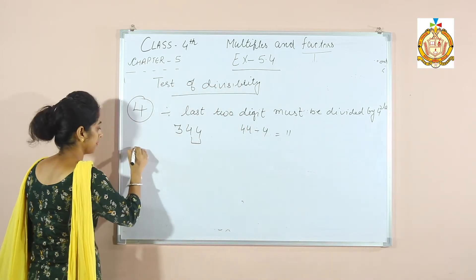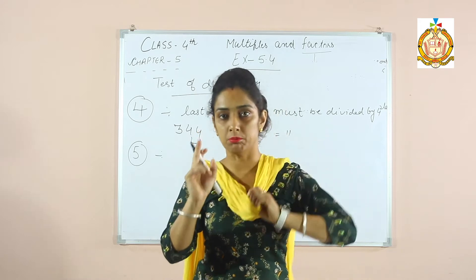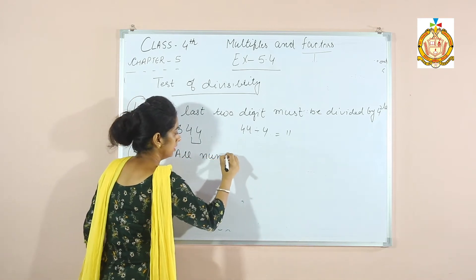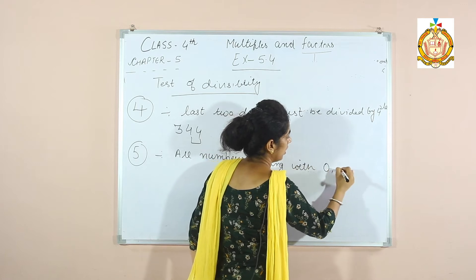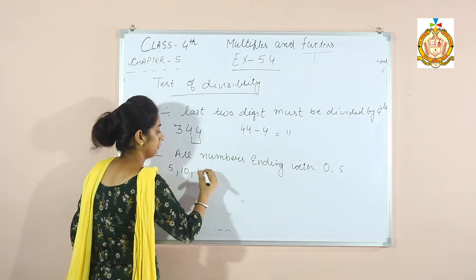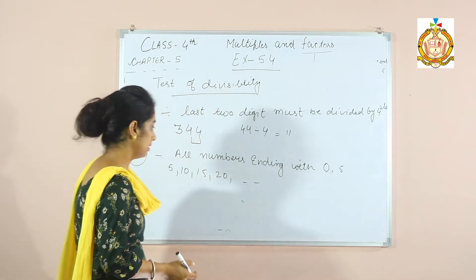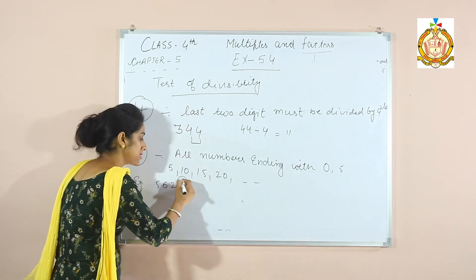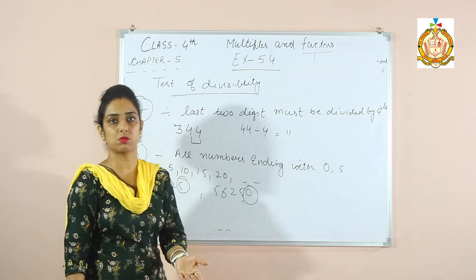Now, divisibility by 5. All numbers ending with 0 or 5 are divisible by 5. Like 5, 10, 15, 20 — all divisible by 5. For example, 5625 ends in 5, so it is divisible by 5. Similarly, 56250 ends in 0, so it is also divisible by 5.